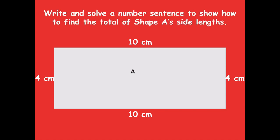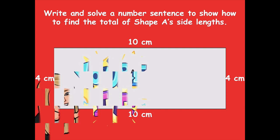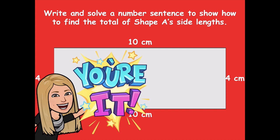Now we're going to write and solve a number sentence to show how to find the total of shape A's side lengths — we want to find the total perimeter. Think back: when we're looking for a total, what operation are we going to use? You can add, and some said multiply. Pause the video, write and solve a number sentence to show the total side lengths, the total perimeter, and then click play when you're ready to go over it together.